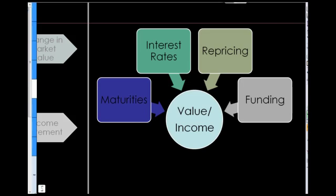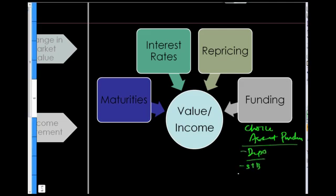So if I were to summarize this, you're effectively saying that one part of the ALM framework is the choices that we make in funding asset purchases. Am I going to fund it by deposits? Am I going to fund it by short-term borrowing? Am I going to fund it by interbank borrowing? Am I going to fund it by shareholder's equity?